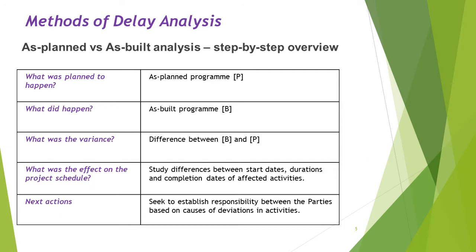Looking briefly at As Planned versus As Built analysis, a step-by-step overview: What was planned to happen? That is P, the as planned program. What did happen? That is B, the as built program. What was the variance? Clearly, the difference between B and P. What was the effect on the project schedule? Which may or may not be the same as B minus P. We study the differences between the start dates, durations, and completion dates of affected activities. The following action is to establish responsibility between the parties based on the causes of deviations in the activities.